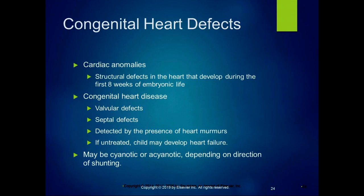Congenital heart defects are cardiac anomalies, meaning abnormalities — structural defects in the heart that develop during the first eight weeks of embryonic life. That's when organogenesis is happening, so things can happen then that continue on until the baby's born. Congenital heart disease can include valvular defects and septal defects — the septum being the division between the two sides of the heart.